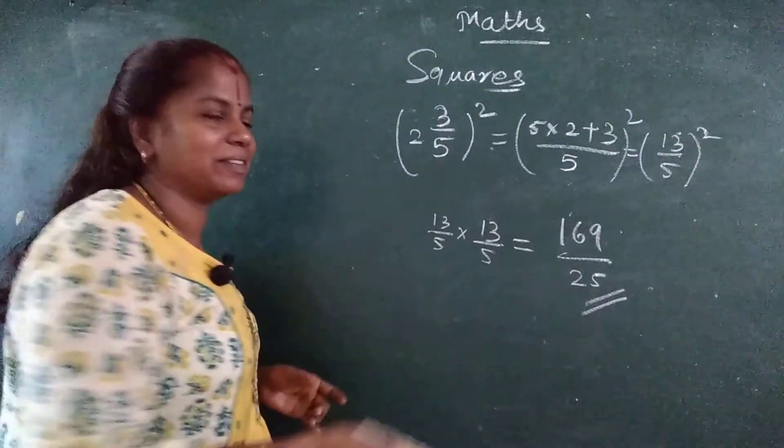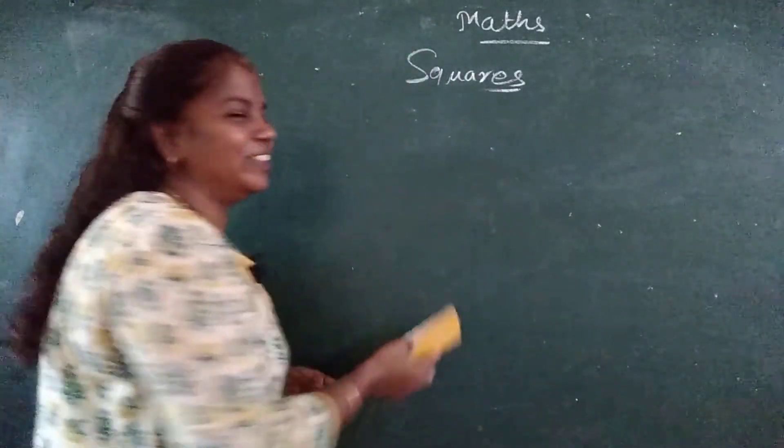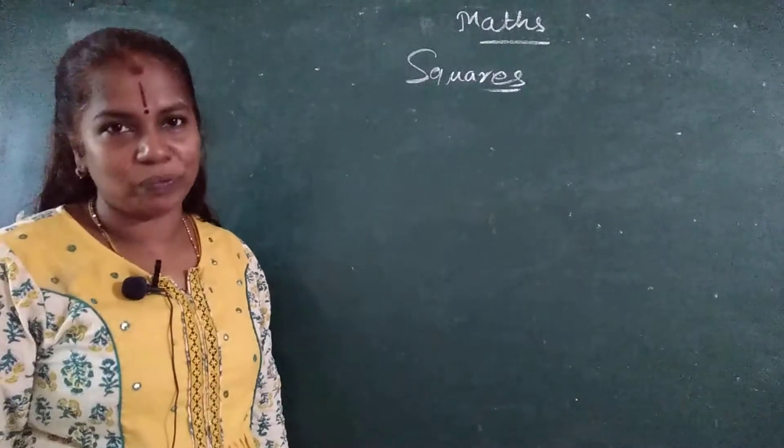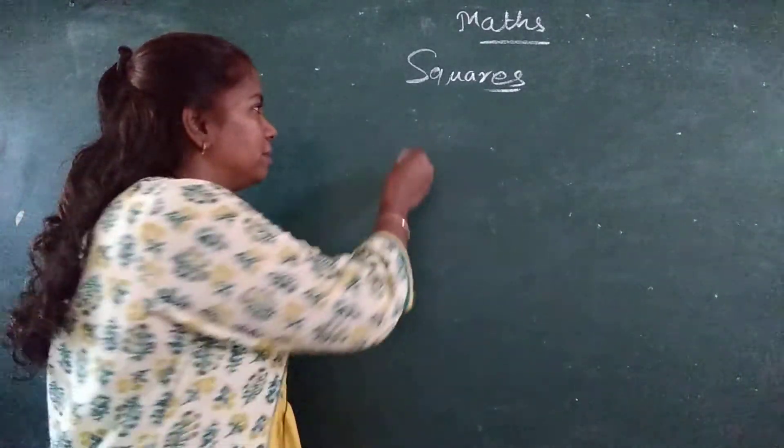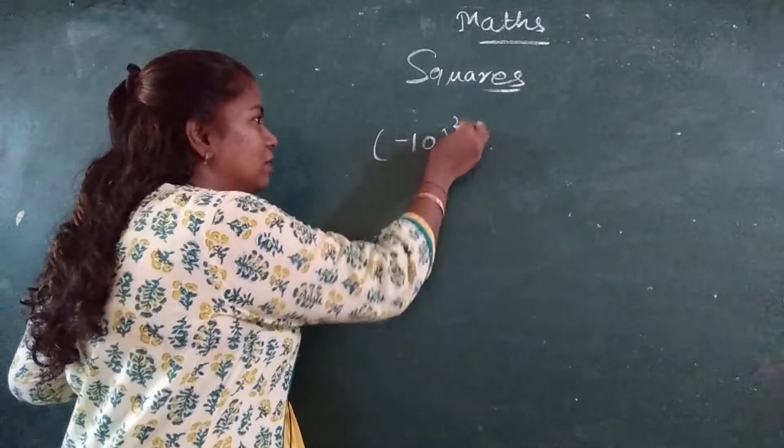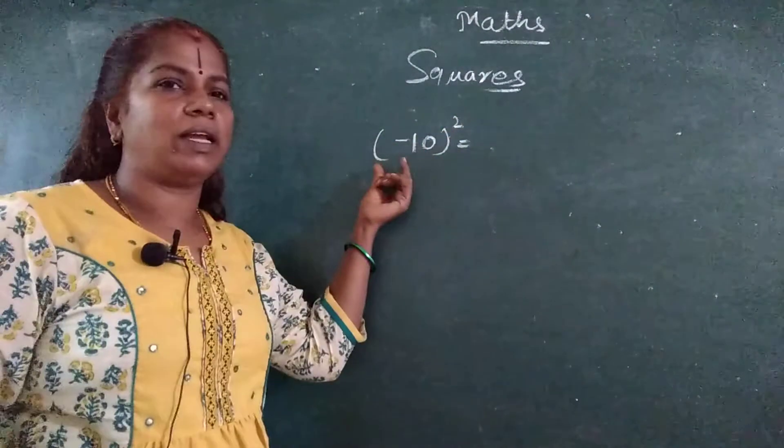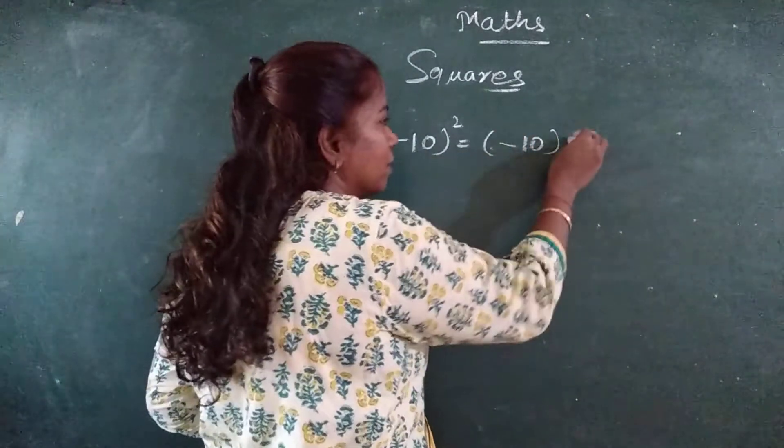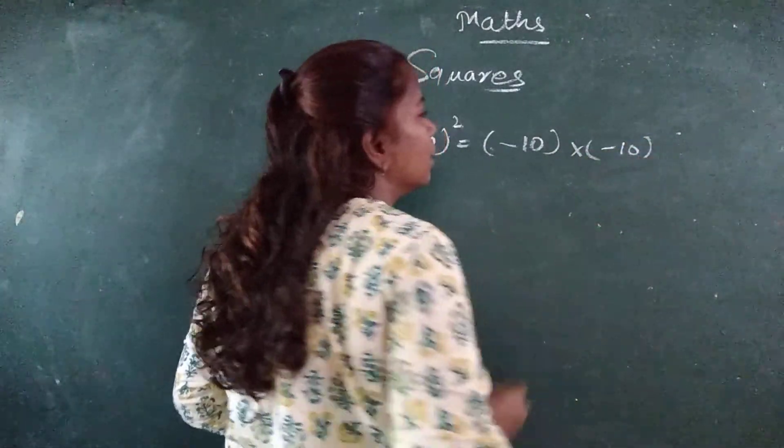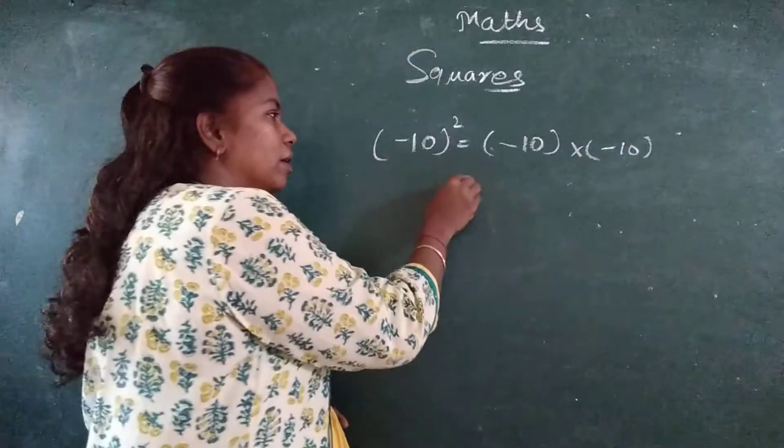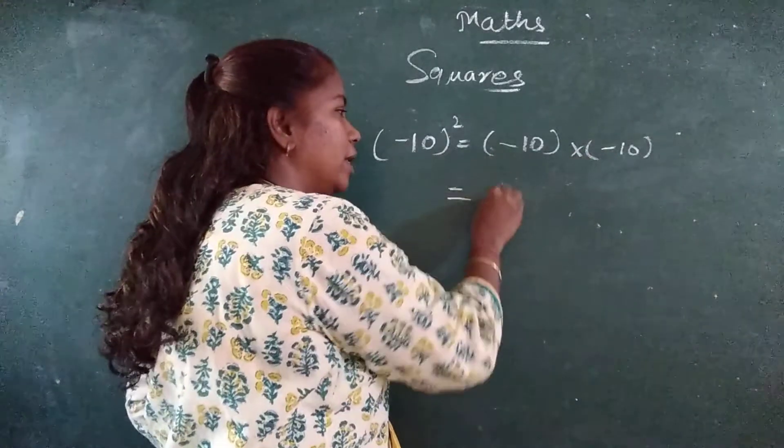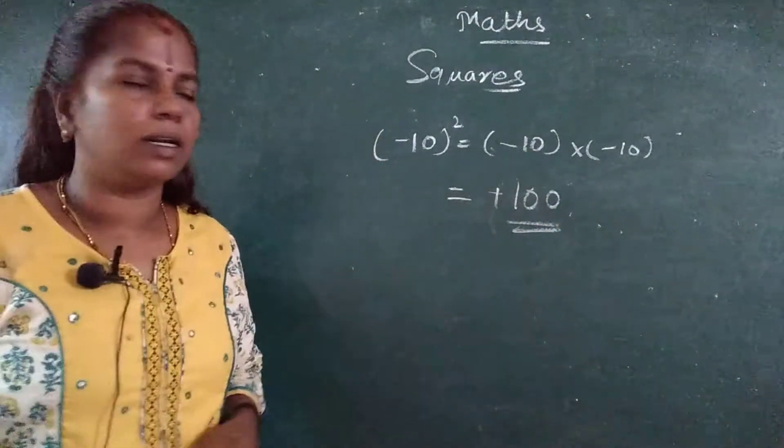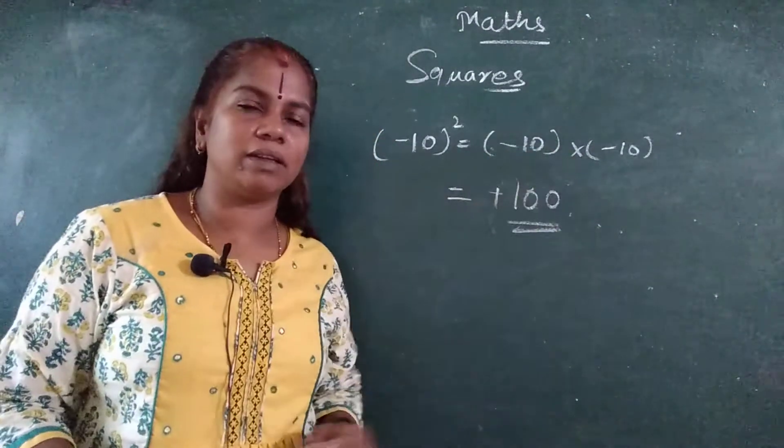I will write this. This is an online video, so you can pause it also. Next, one more example I will give you. For example, minus 10, the whole square. If minus comes, what do you do? Minus 10 into minus 10. Minus into minus is plus. 10 10's are 100.